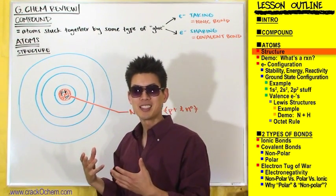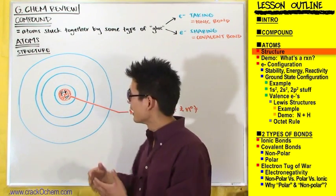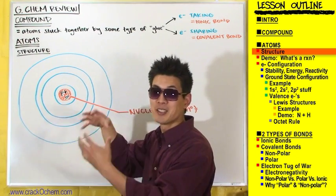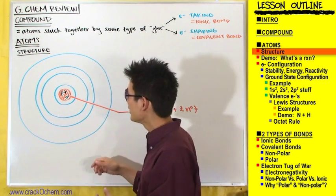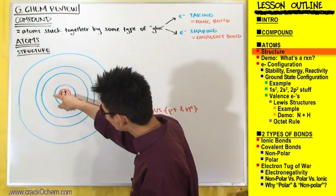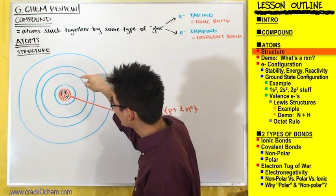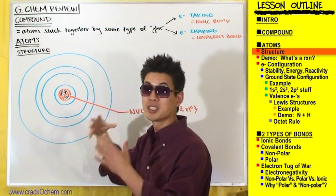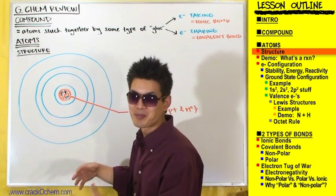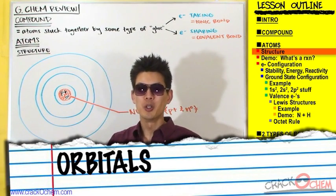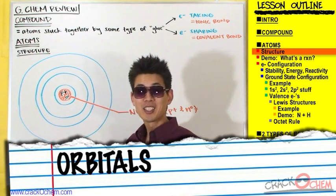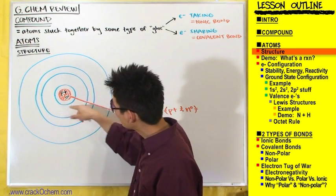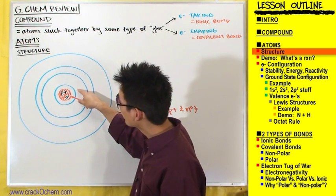The important thing to understand about electrons in these rings is that an electron in one of these rings stays in that ring — it's confined there. If an electron is in this ring, it's going to stay in this ring; it's not going to jump from one ring to another. But what we don't know about electrons in these rings is their exact location. We know it stays in this ring, but we don't know exactly where it is.